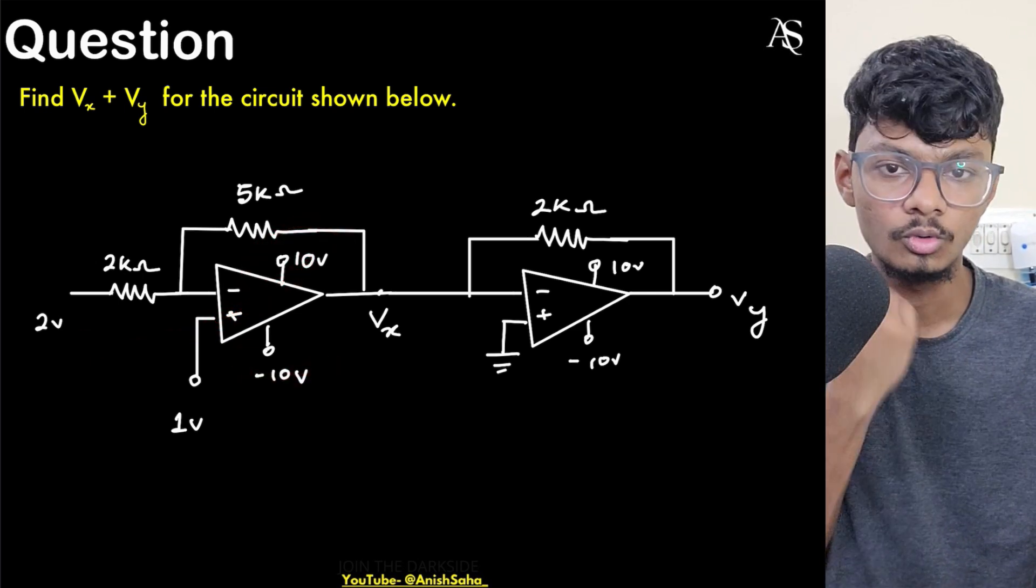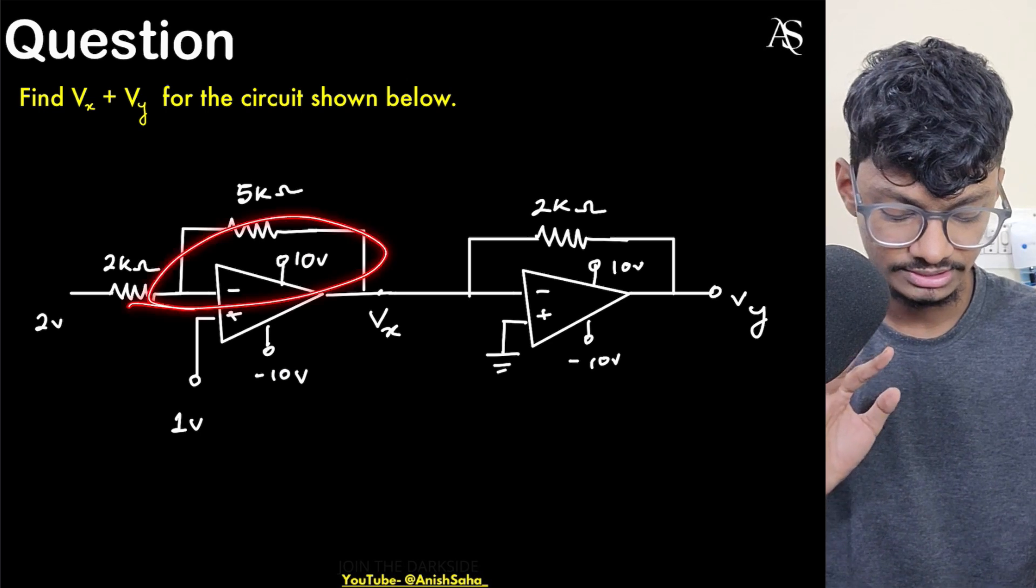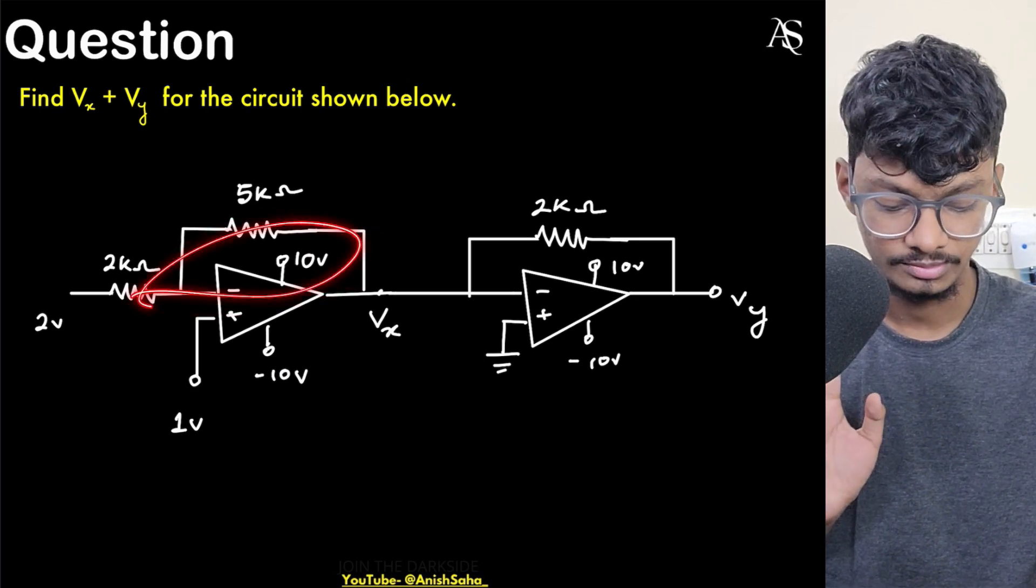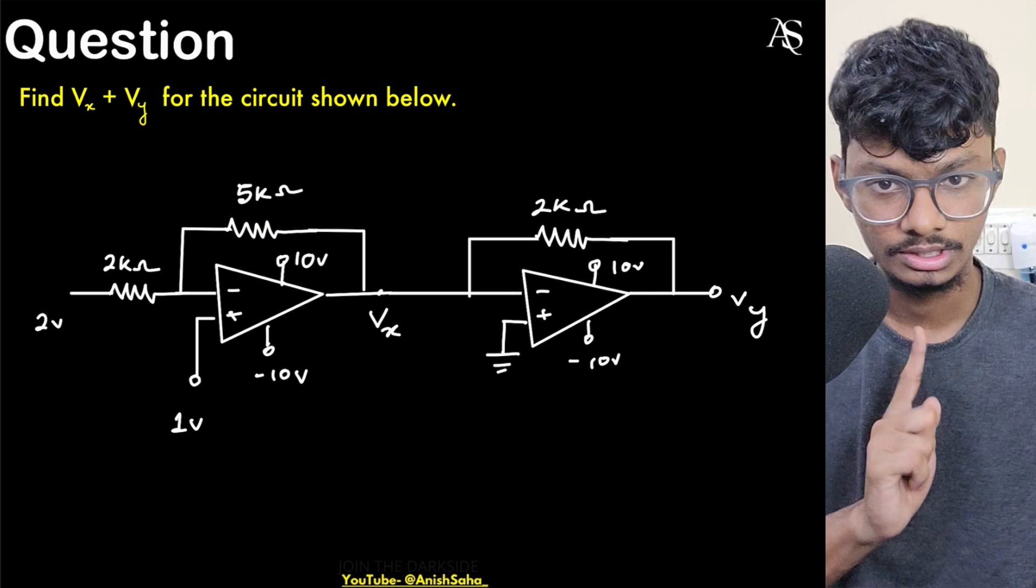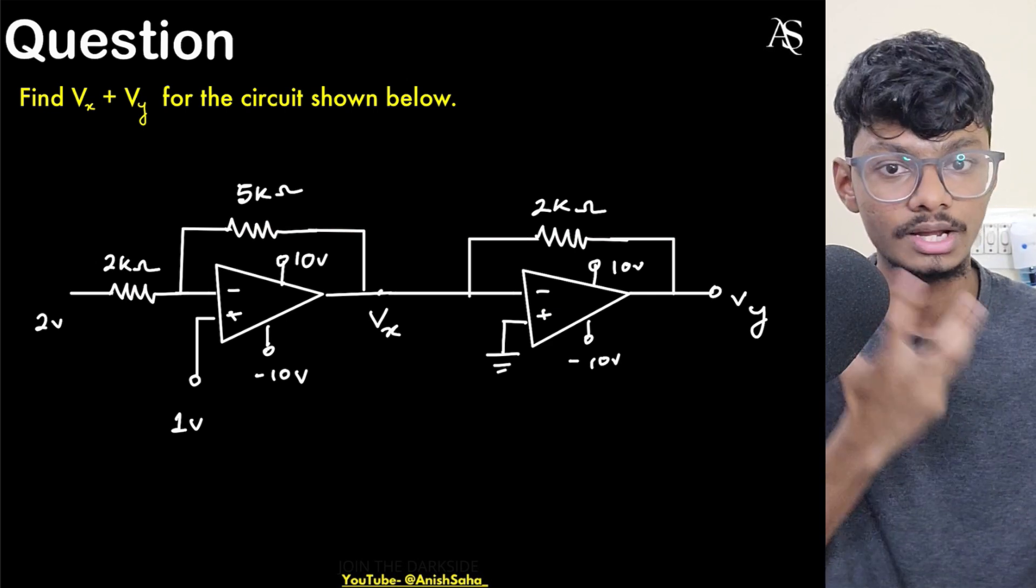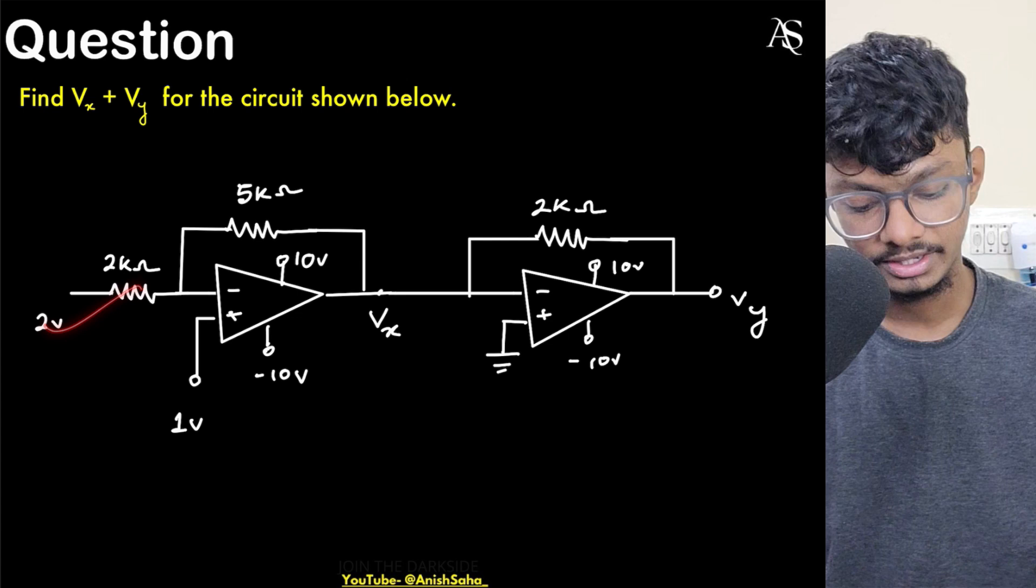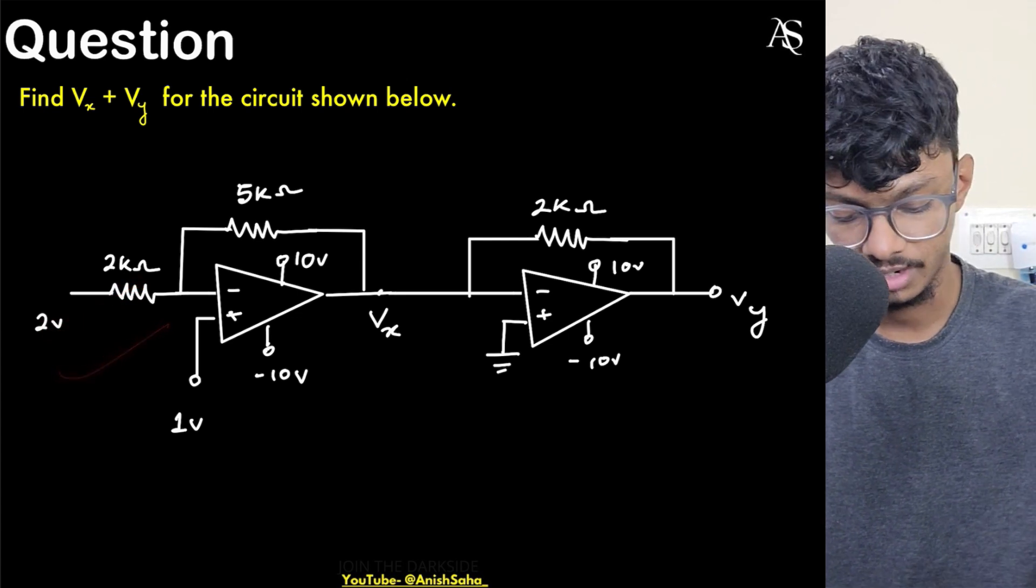Op amp is ideal except that they have provided us with saturation voltages. So how do we go along with this? First of all, I'm saying this is in negative feedback, this op amp is in negative feedback and this op amp is also in negative feedback. So both are in negative feedback, that's fine. So we can apply virtual ground concept. If I apply the virtual ground concept in the first op amp, what will happen?